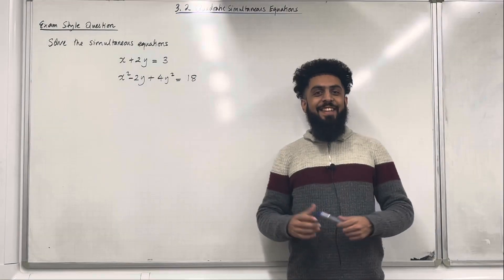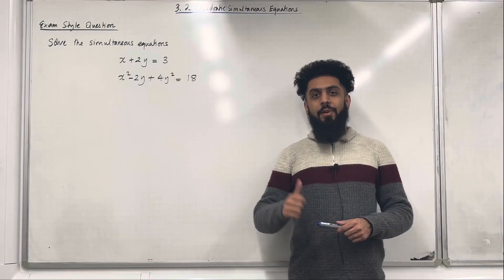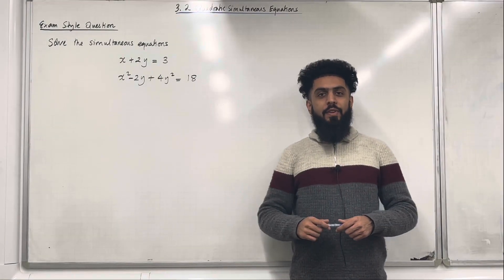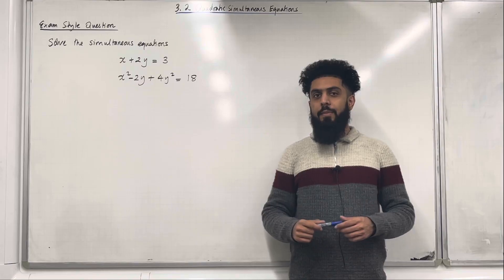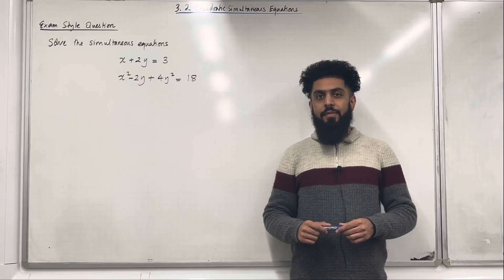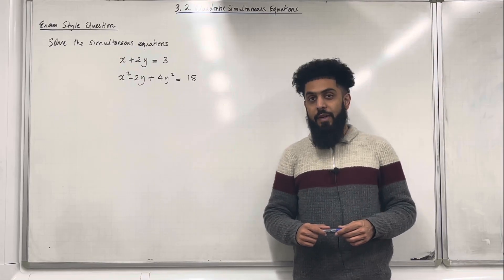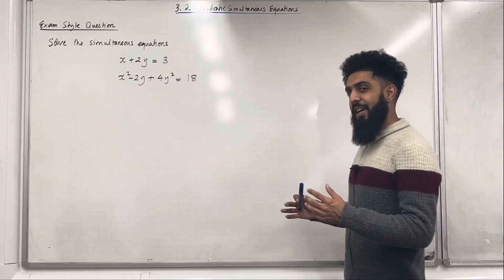Welcome back. In this teaching video I'll be looking at 3.2 quadratic simultaneous equations. 3.2 represents chapter 3, section 2 of the Pearson A-level Maths Pure Maths Year 1 textbook.